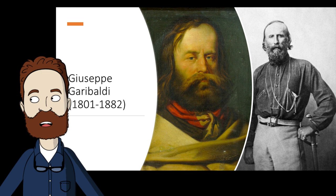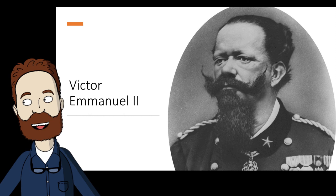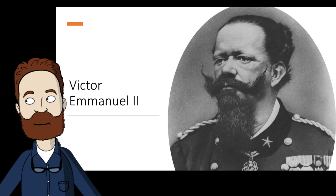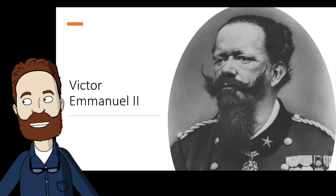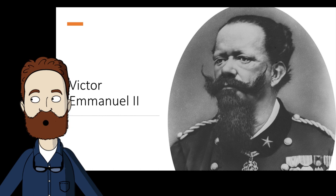In 1860, Garibaldi captured the island of Sicily and then marched to Naples where the people were already in revolt. He intended to convert the territory into an independent republic, but was finally persuaded to surrender it to the King of Sardinia. With most of the Italian peninsula united under the single rule of King Victor Emmanuel II, he assumed the title of King of Italy in 1861. Venice was still in the hands of Austria, but they were forced to cede it to the Italians in the Seven Weeks War with Prussia.